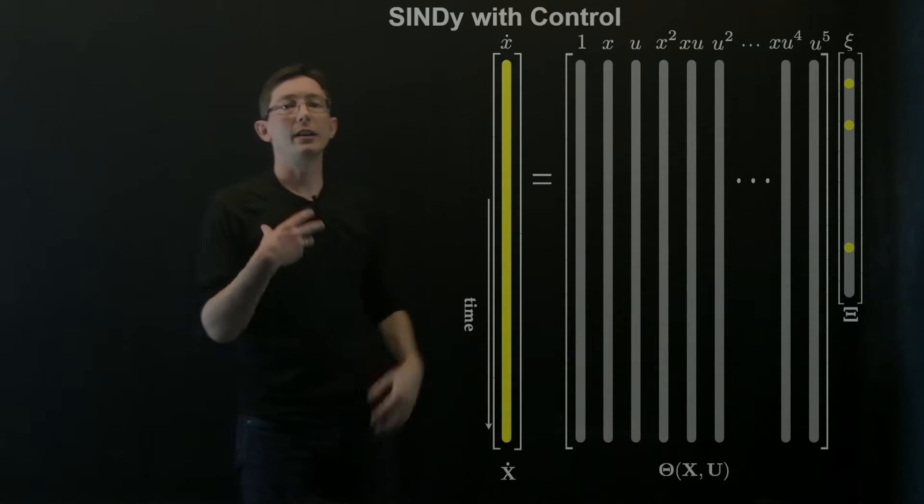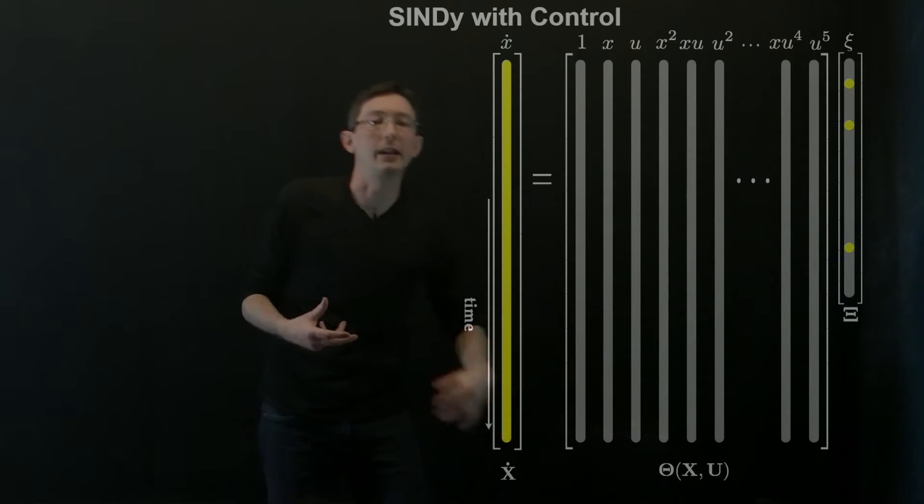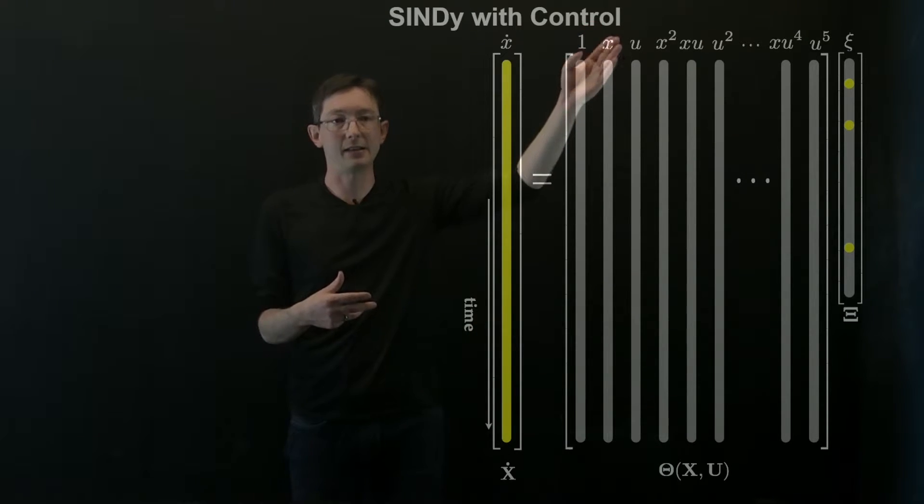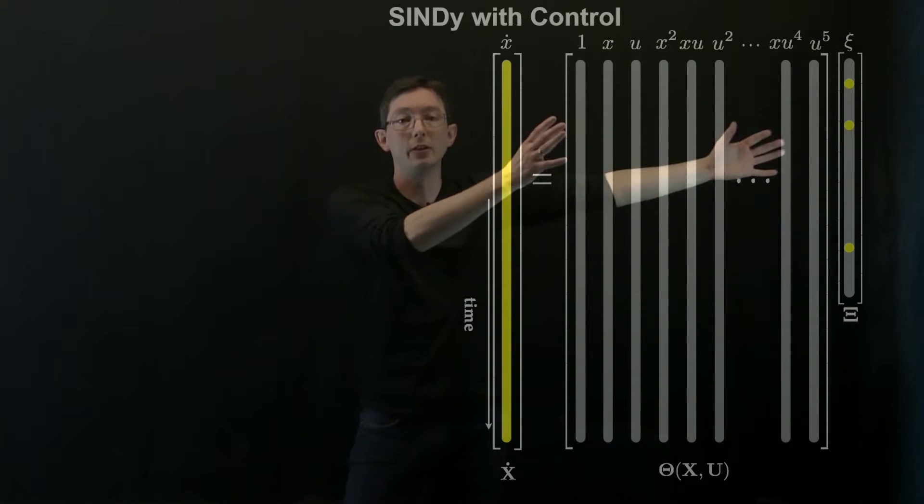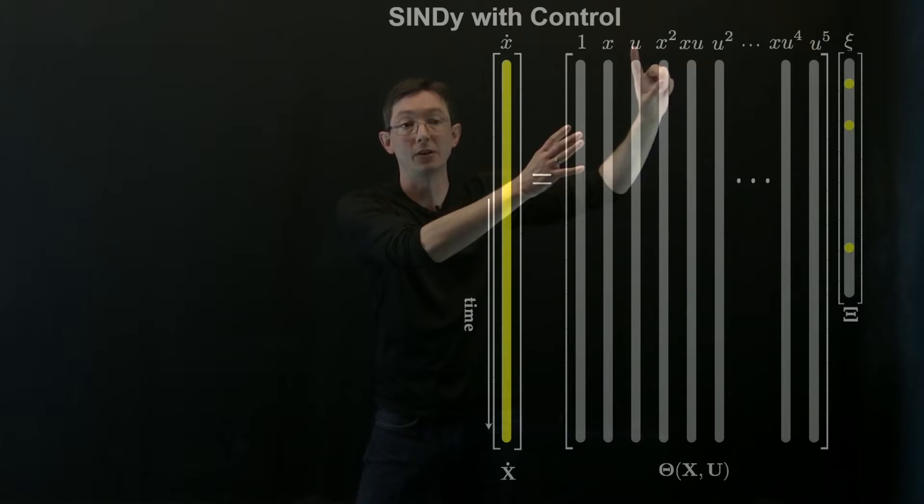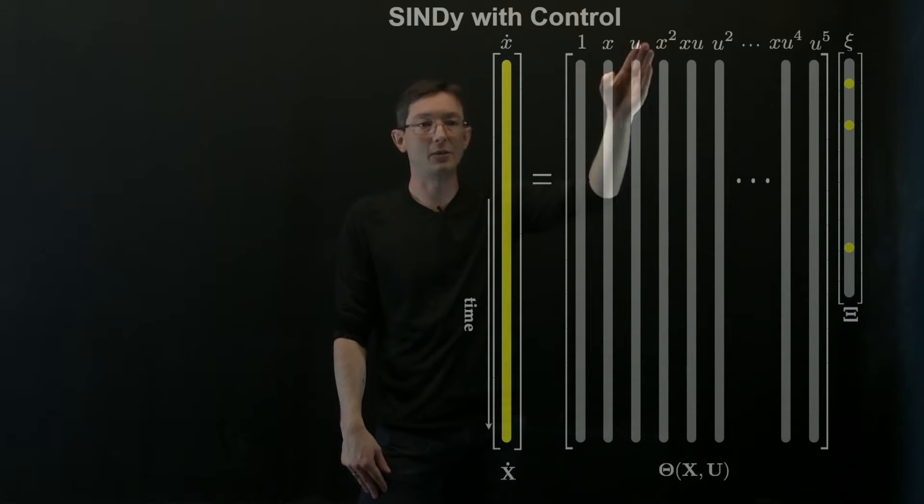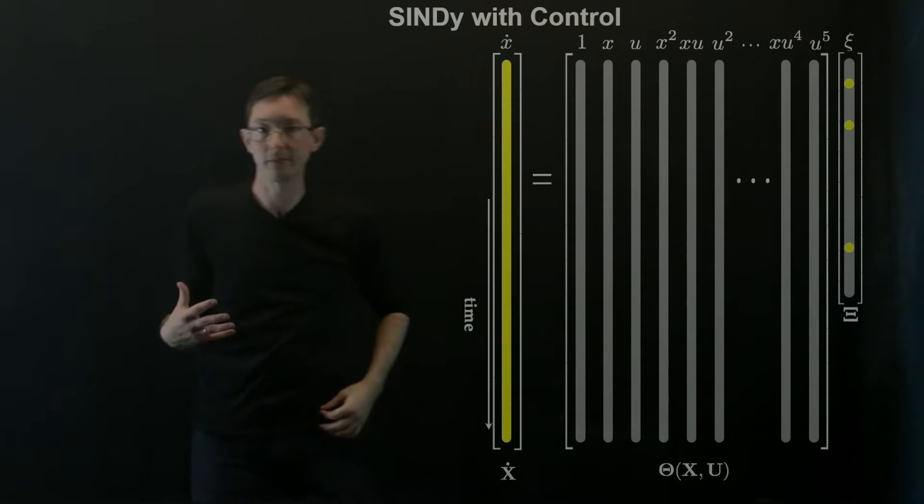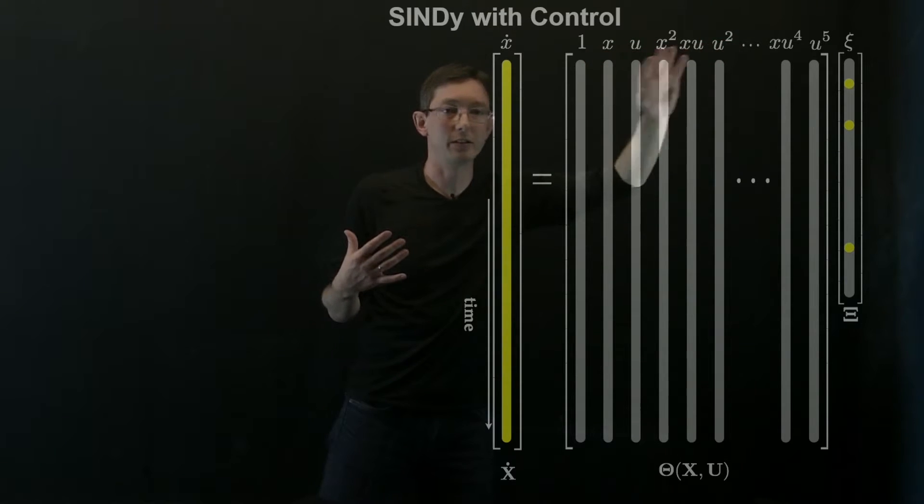So this is a modified version of SINDy where now instead of just building a library of functions of x like x, x squared, x cubed and so on, now what we're going to do is allow our library to include cross terms that include the actuation u. So my library includes x, u, x squared, xu and so on and so forth.